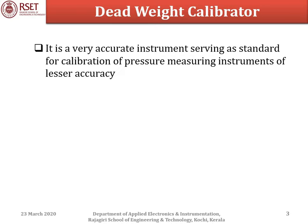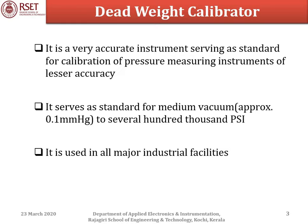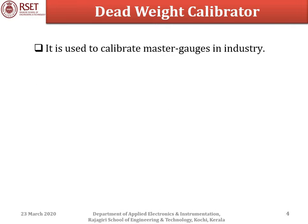A deadweight calibrator is a very accurate instrument serving as a standard for calibration of pressure measuring instruments of lesser accuracy. By standard, we mean an instrument that acts as a reference for readings taken by some other instrument, acting as the true value to compare against. It is used in the range from 0.1 mm of mercury to several hundred psi, in all major industrial facilities, and to calibrate master gauges. Master gauges are gauges which act as reference for calibrating other gauges used more frequently.